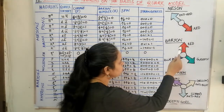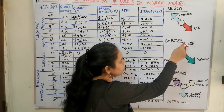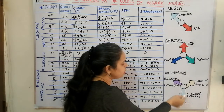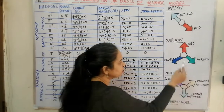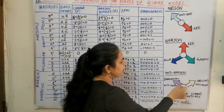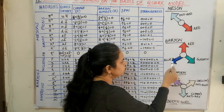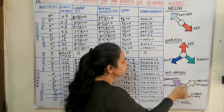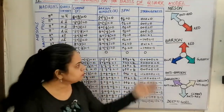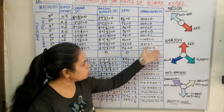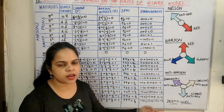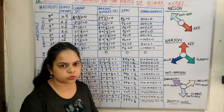If the quark is in the positive direction, its anti-particle will be in the downward direction. If it is moving to the right, the anti-quark will move to the left, and vice versa. This is how the baryon and anti-baryon are formed using the color schemes.